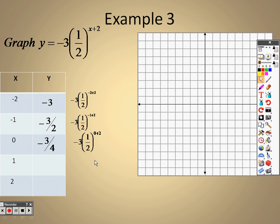When you plug in 0, you end up getting negative 0.75, which is negative 3 fourths. When you plug in 1, you end up getting negative 0.375, which is negative 3 eighths, and when you plug in a 2, you end up getting negative 0.1875, which is negative 3 over 16.